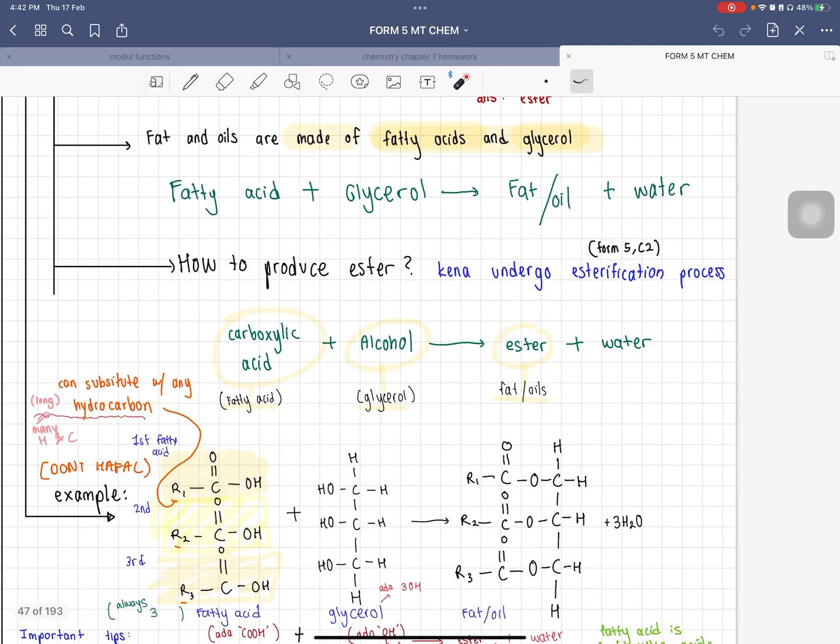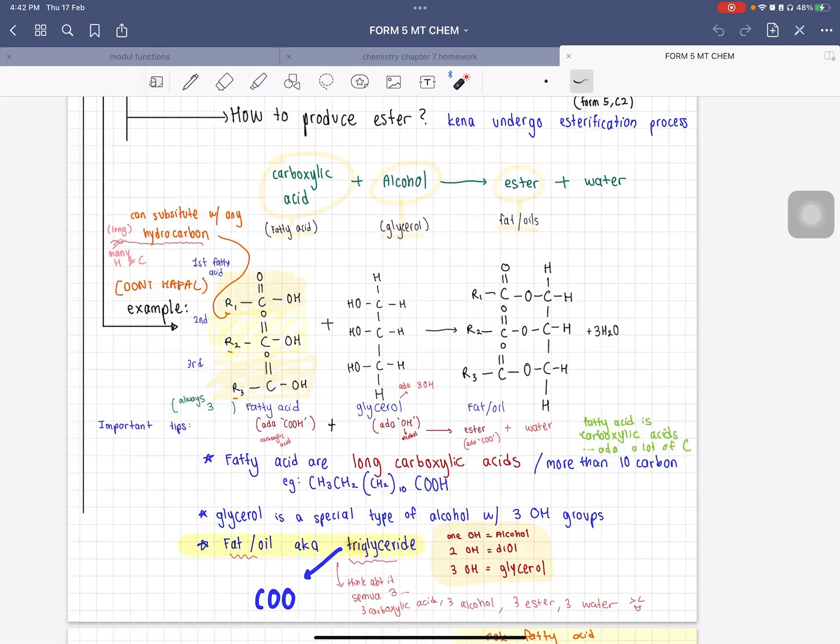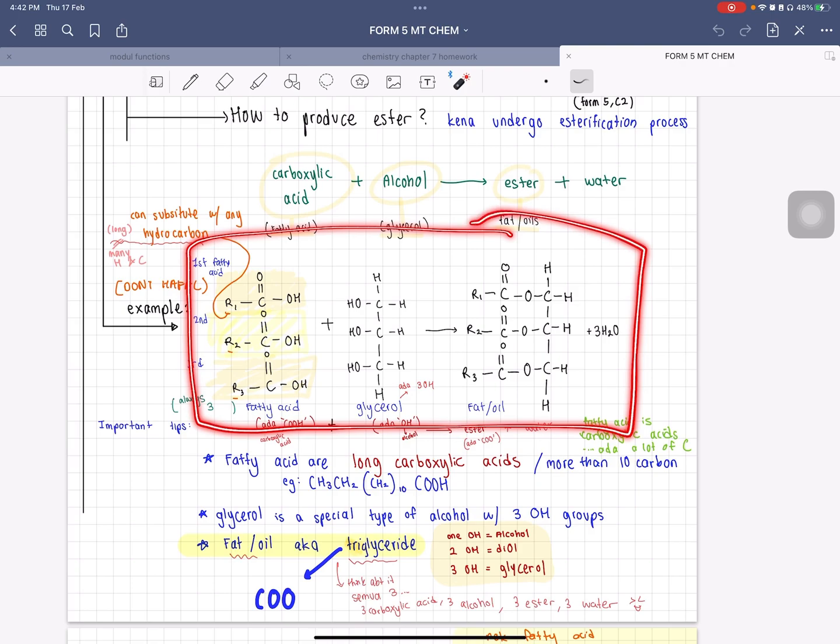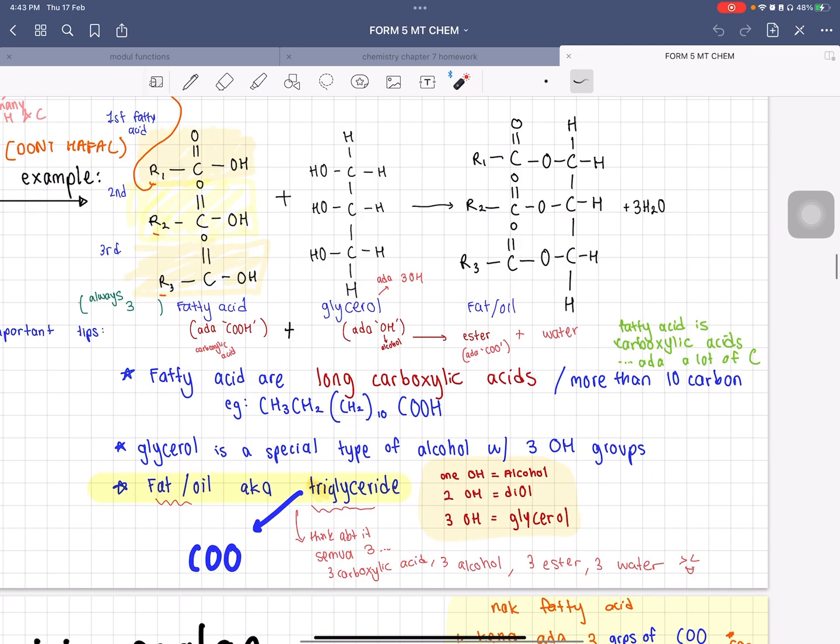Fatty acid, one example is carboxylic acid, a type of fatty acid. When it's mixed with alcohol, which is a type of glycerol, it produces ester plus water. I'm not gonna dive deep inside this part of the chapter, so do watch other videos or get in touch with your teacher. But fatty acids are basically long carboxylic acid, or to put it into context, it has more than 10 carbons.